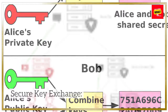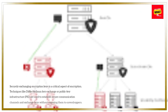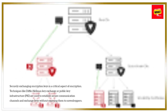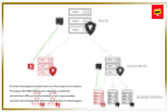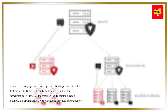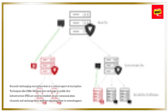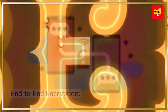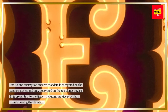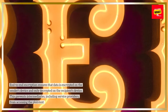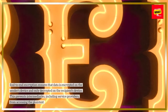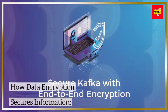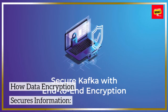Securely exchanging encryption keys is a critical aspect of encryption. Techniques like Diffie-Hellman Key Exchange or Public Key Infrastructure (PKI) are used to establish secure communication channels and exchange keys without exposing them to eavesdroppers. End-to-end encryption ensures that data is encrypted on the sender's device and only decrypted on the recipient's device, preventing intermediaries, including service providers, from accessing the plain text.